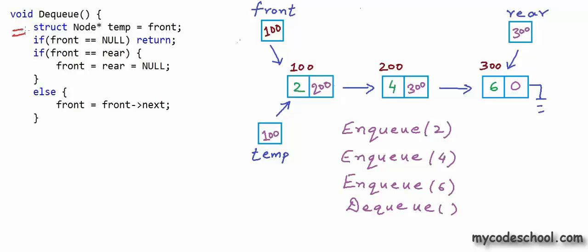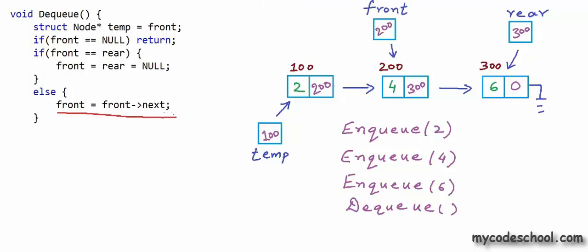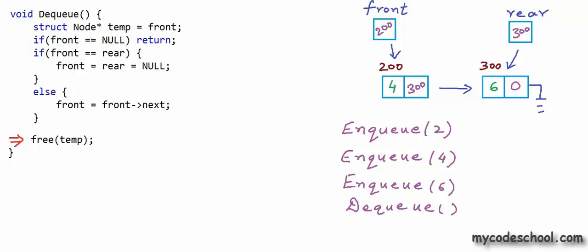But why did we create the temporary pointer? Simply incrementing front is not enough — the previous front node remains in dynamic memory and anything in dynamic memory must be explicitly freed. We first store the old front address in temp, then move front to front->next. Now we pass temp to the free function, which wipes that node from memory. That is why the temp pointer was needed.